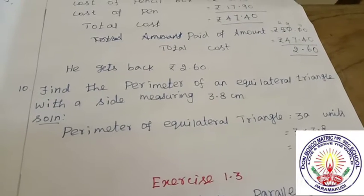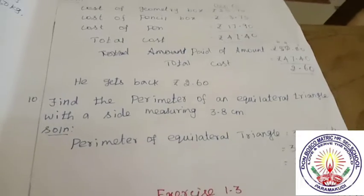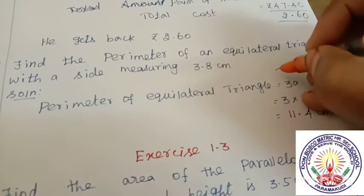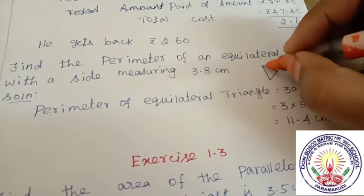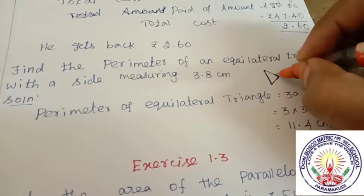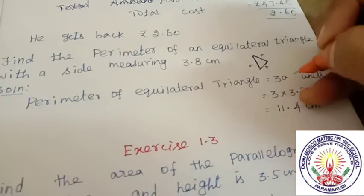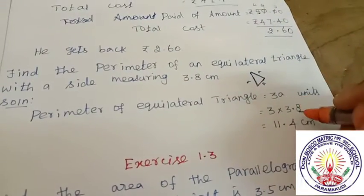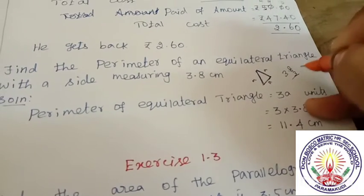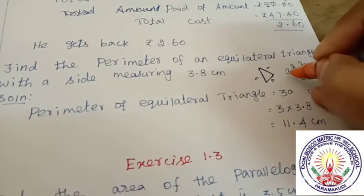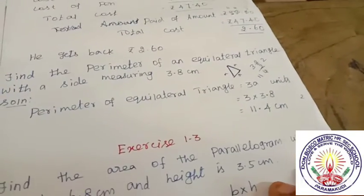Tenth sum: Find the perimeter of an equilateral triangle with side measuring 3.8 cm. Perimeter is sum of outside. Equilateral triangle, both sides are equal, A, A, A. 3A units. A value is 3.8. So 3.8 into 3. 3 eights are 24, 3 threes are 9 plus 2 is 11. Therefore 11.4 cm.